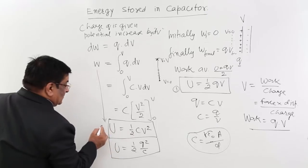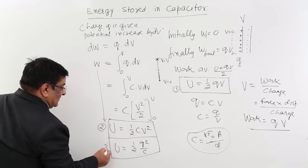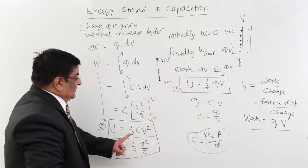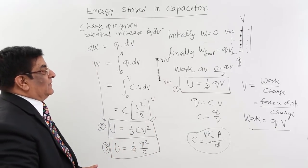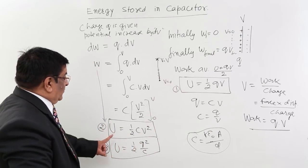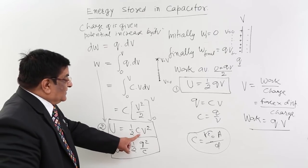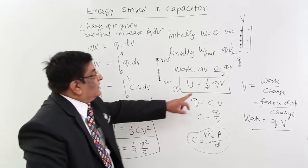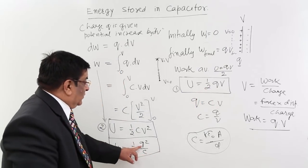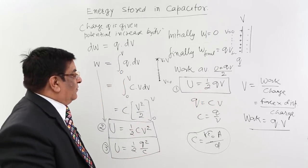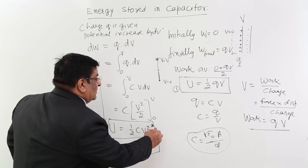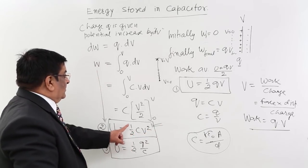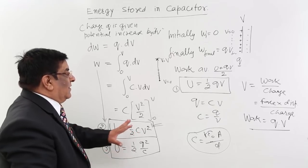So this is one form, this is other form, this is third form. These are the three formulas for energy given to a capacitor. Most of the time we are using this formula because C is a measurable quantity, V is a measurable quantity. Q is not a measurable quantity. So this is more acceptable and measurable formula: U equals half CV square energy.